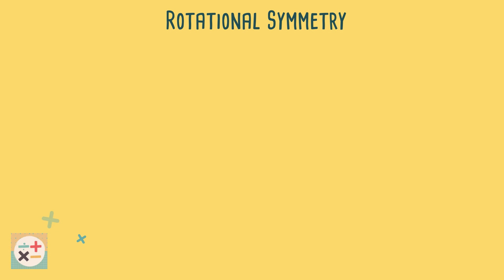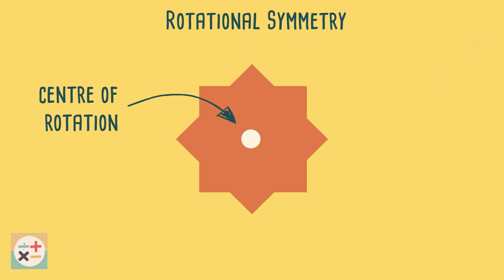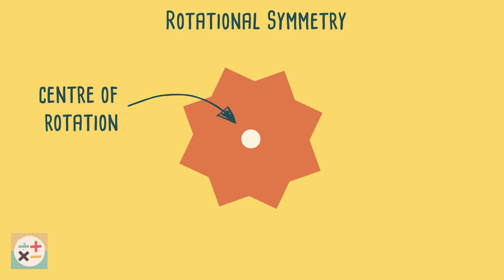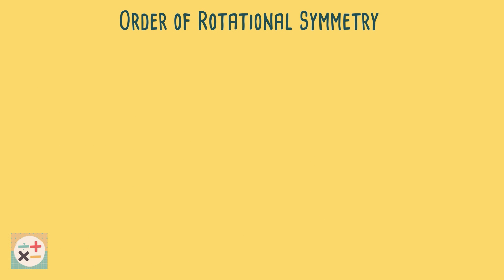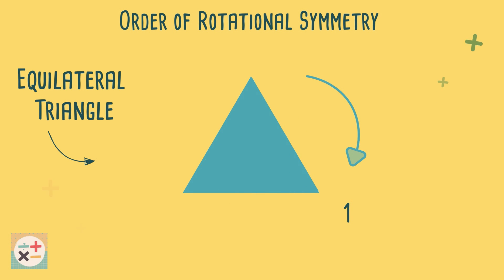So what exactly is rotational symmetry? Rotational symmetry refers to the symmetry of a shape when it is rotated about its center, and whether or not it will look the same when rotated partially. The order of rotational symmetry is the number of times that a shape will look exactly the same when rotated through 360 degrees.